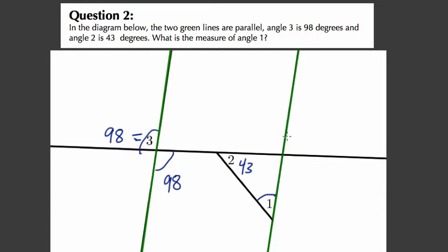Our two green lines are parallel, so 98 degrees here is the same as having 98 degrees here - those are alternate interior angles.